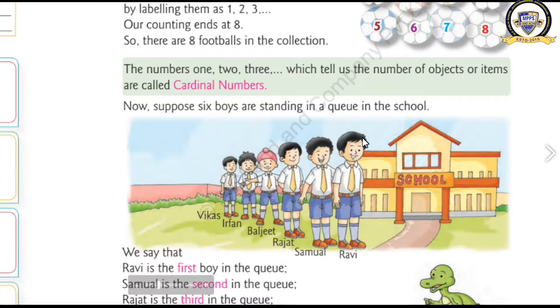If I want to say the position of the student, that can be easily expressed by the use of Ordinal Numbers. See, the first one is Ravi. He is in front of the queue. So, he is the first fellow. Ravi is the first boy in the queue.